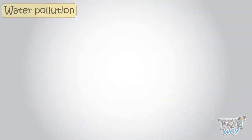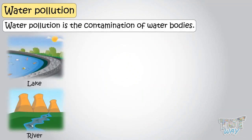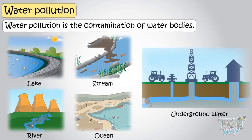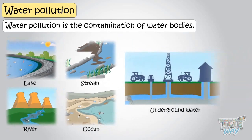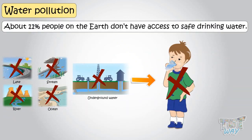Kids, water pollution is a contamination of water bodies like lakes, rivers, streams, oceans, and even the underground water. This pollution makes the water in water bodies unsafe for use. About 11% of people on Earth don't have access to safe drinking water.